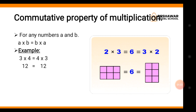This is the commutative property of multiplication. Example جو یہاں پہ given ہے: 3 multiply 4 is equal to 4 multiply 3. First جو 3 multiply 4 ہے ان کو multiply کریں، پھر ان کے places interchange کر لیں پھر multiply کریں — so both will have the same result. Like 3 multiply 4 is equal to 12, and 4 multiply 3 is also equal to 12.